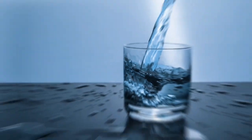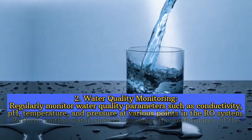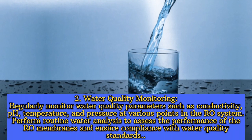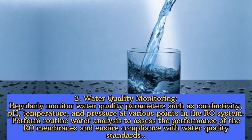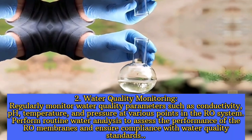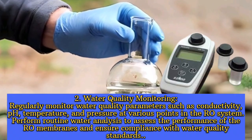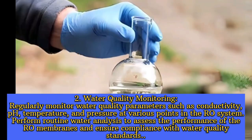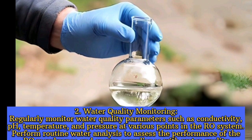2. Water quality monitoring: regularly monitor water quality parameters such as conductivity, pH, temperature, and pressure at various points in the RO system. Perform routine water analysis to assess the performance of the RO membranes and ensure compliance with water quality standards.